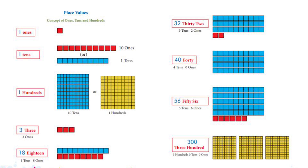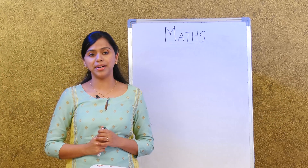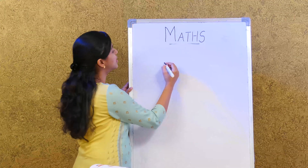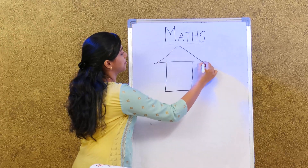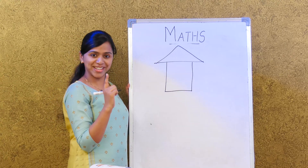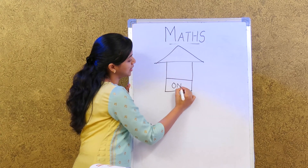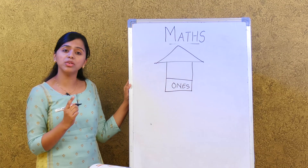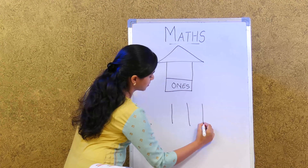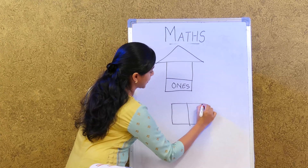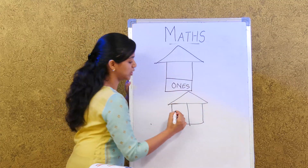Now let's look at the place value house. For a single digit number, the place value house has only one room — the ones room. For a two-digit number, the house has two rooms: ones and tens.